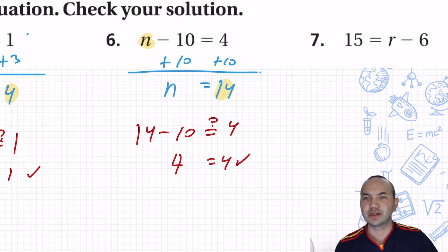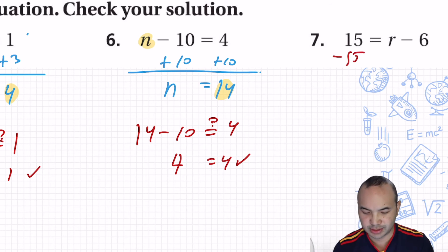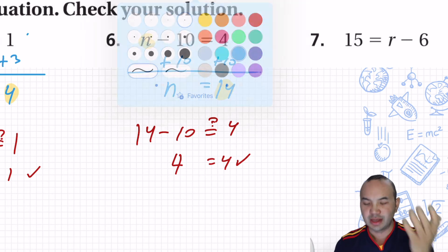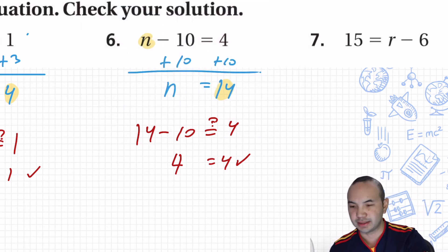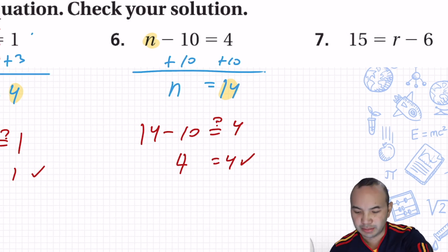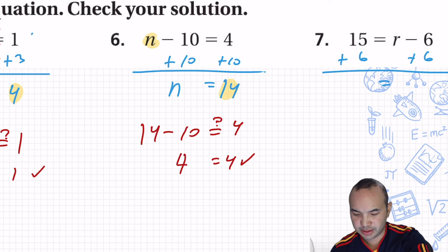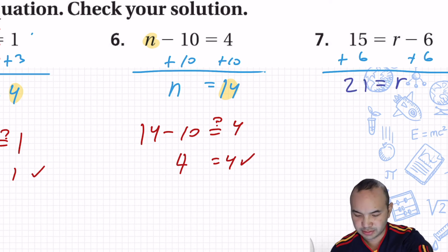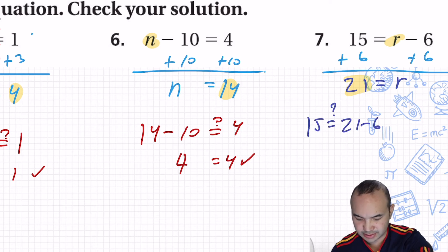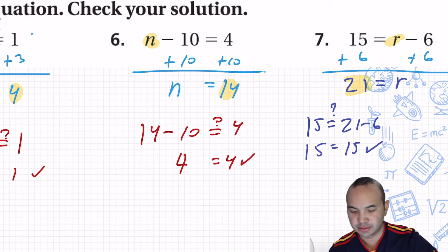Now the R is on the right side, so you're not always going to subtract what's on the left. Look at the problem and think: I'm trying to find what R is. R is on the right side with minus 6. So I'll use the addition property of equality and add 6 to both sides. Minus 6 plus 6 is 0, leaving just R. And 15 plus 6 is 21. Check: 15 equals 21 minus 6 — 15 equals 15. Correct.